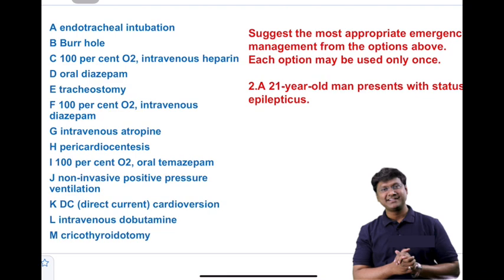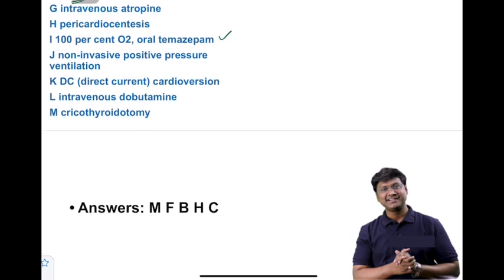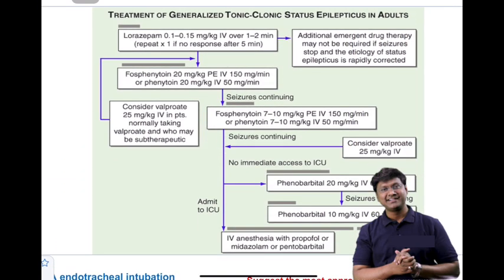The second clinical scenario: a 21-year-old man presents with status epilepticus. Benzodiazepines are the drug of choice. Among the options — oral diazepam, intravenous diazepam, and oral temazepam — in status epilepticus the route of administration is intravenous, along with connecting the patient to 100% oxygen. If both lorazepam and diazepam are options, go with lorazepam, which has a longer duration of action.